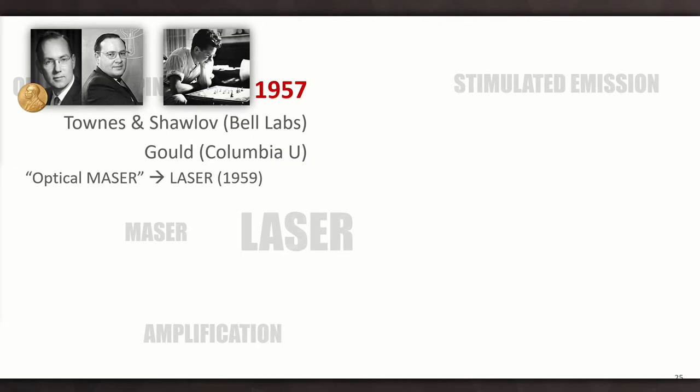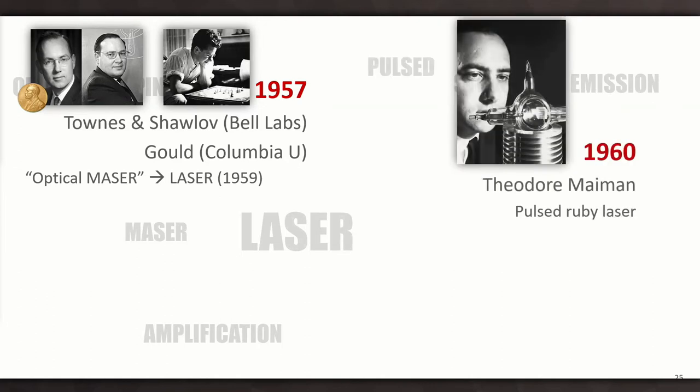So what happened in 1957, a group from Bell Labs and Professor Gould from Columbia University, they produced an optical MASER. Now, the Bell Labs guys wanted to keep on calling it an optical MASER. But Gould actually said we should call it a laser because it's light amplification by stimulated emission of radiation. This was theorized at the time. But then in 1960, Theodore Maiman actually demonstrated it. He demonstrated it in the lab using a pulsed ruby laser.